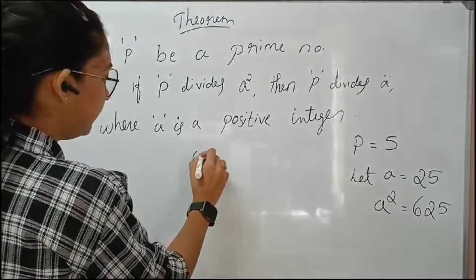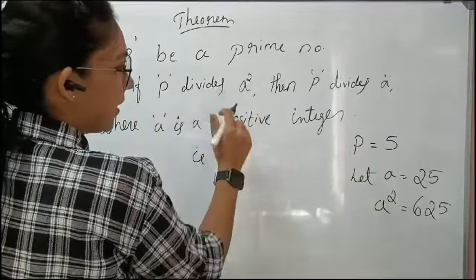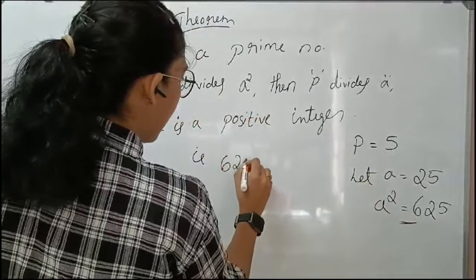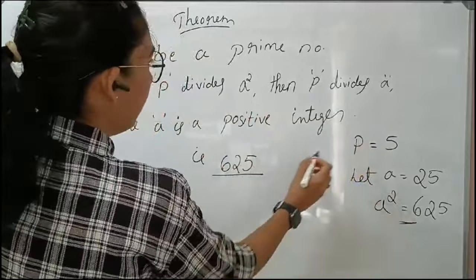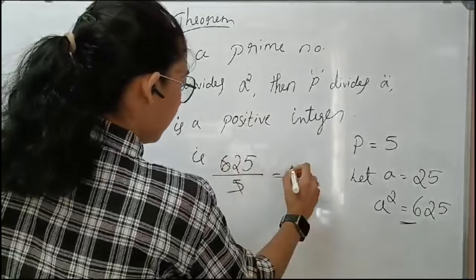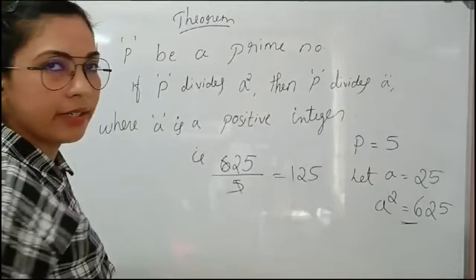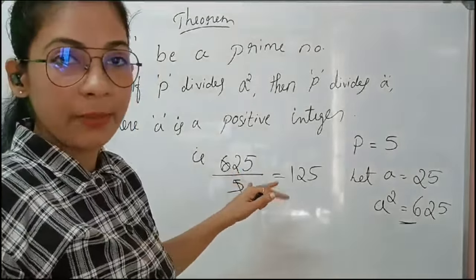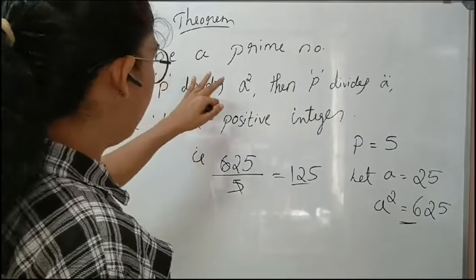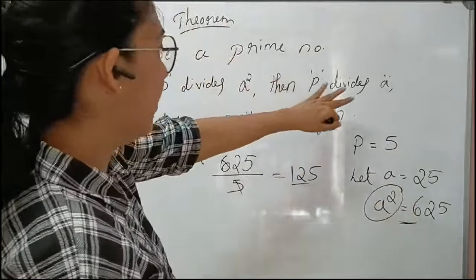That is, if P equals 5 divides A squared, and A squared is 625 — then 625 divided by P, which is 5, gives 125. This 5 clearly divides 625. So the answer is 125, and 5 is clearly divisible into 625.